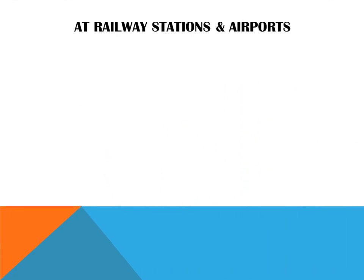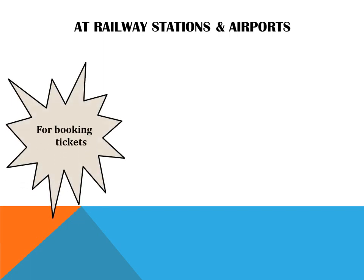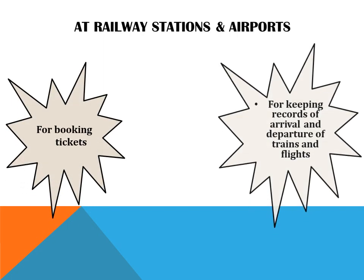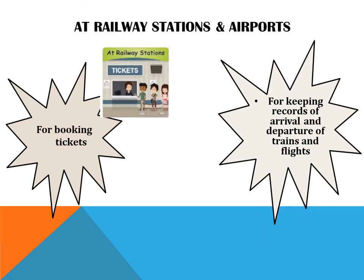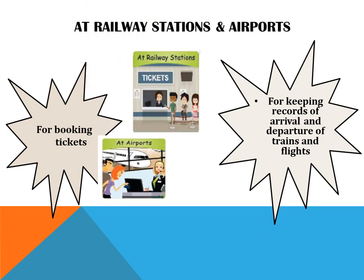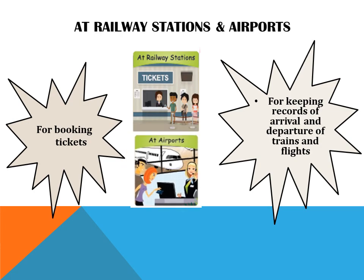Next is at railway stations and airports. Why do we use computer at railway stations and airports? For booking tickets, for keeping records of arrival and departure of trains and flights, and we can also book our tickets online.